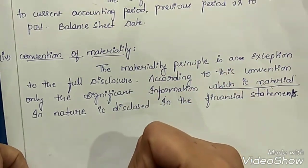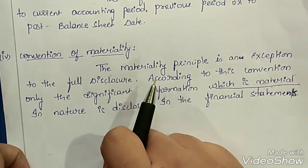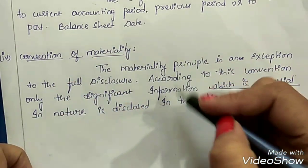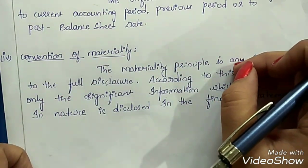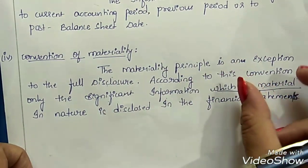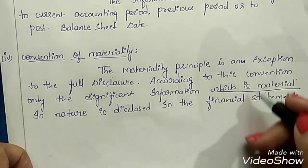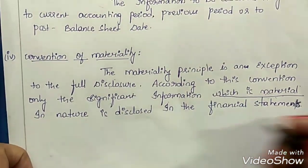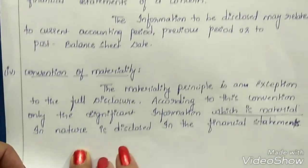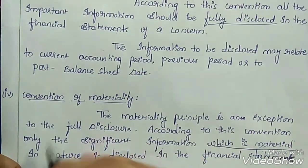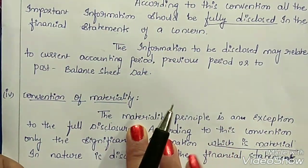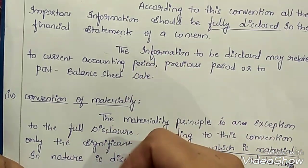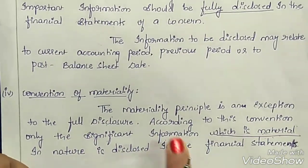In order to minimize cost, the accountant reports only material information. He eliminates all insignificant or immaterial information, refines all the information, and only material information is disclosed in the books of accounts or financial statements. So these were the accounting conventions — customs and traditions followed by accountants while preparing the financial statements of a business concern.